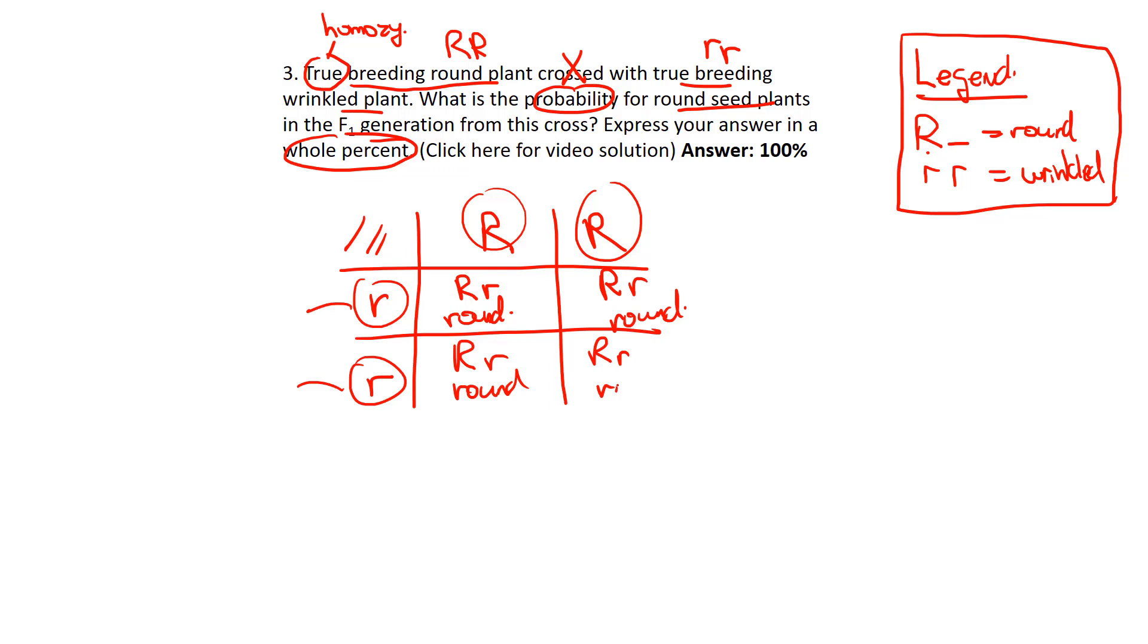They want it as a percentage. Whole percent means there's no decimal places. That would be 100% of your offspring are going to be round. Okay, thanks guys.